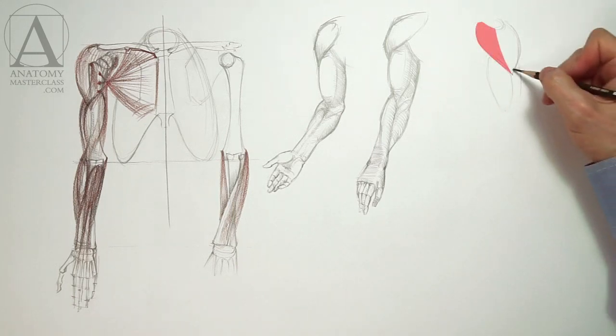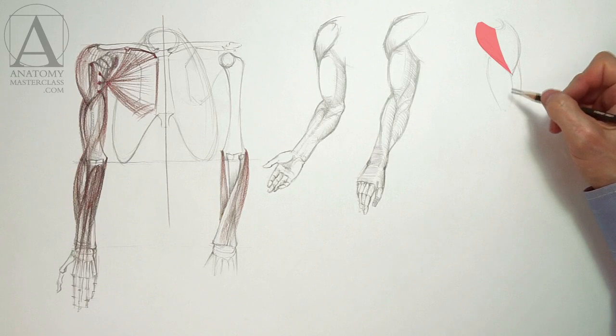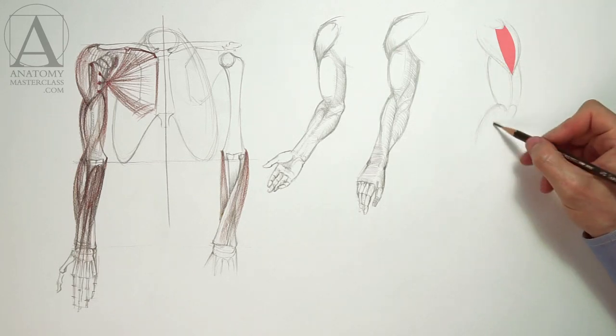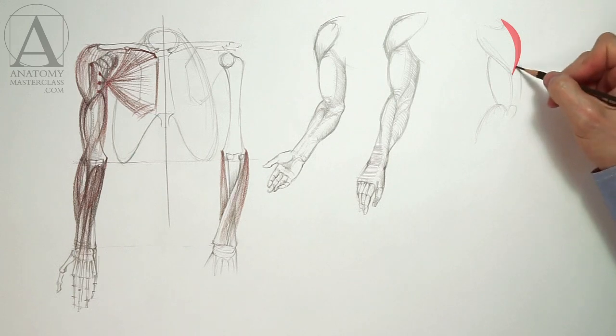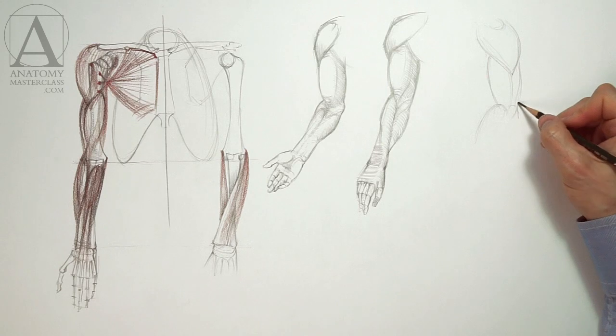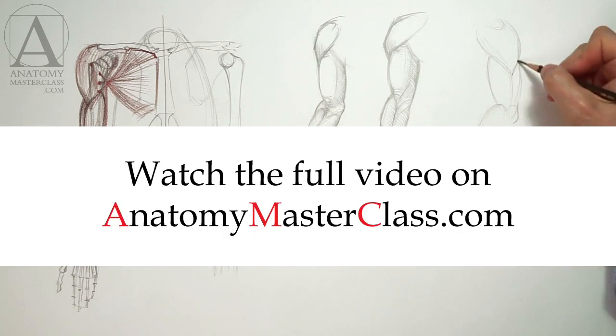The frontal portion starts at the collarbone. The side portion starts from the acromion of the shoulder blade. And the back portion starts from the spine of the shoulder blade. This muscle inserts into the approximate middle of the humerus.